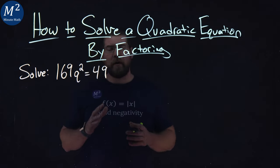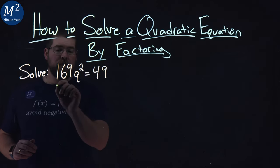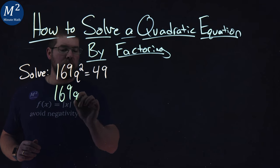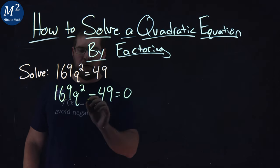So to do so, I want to get the whole equation equal to zero. I'm going to subtract 49 from both sides, and I'm left with 169q² - 49 = 0.